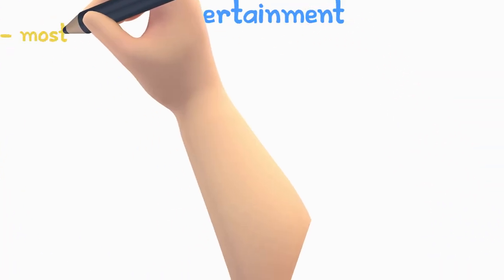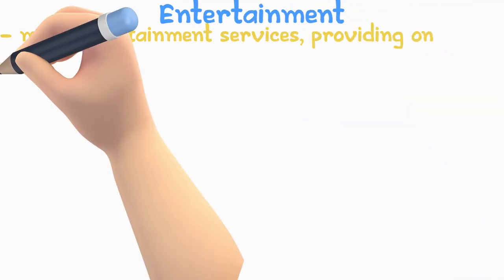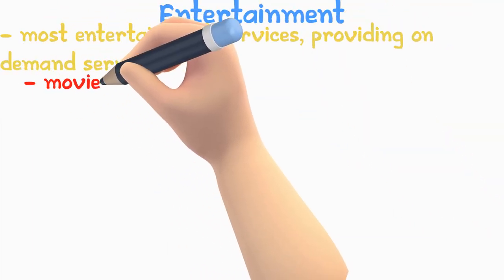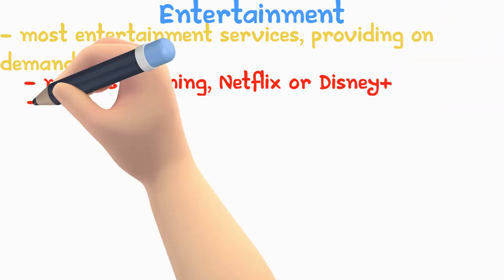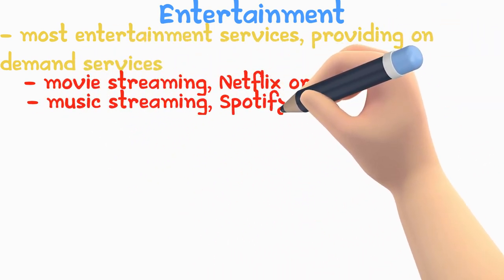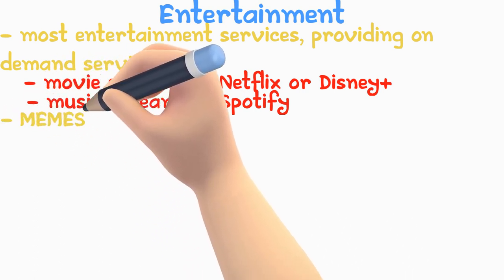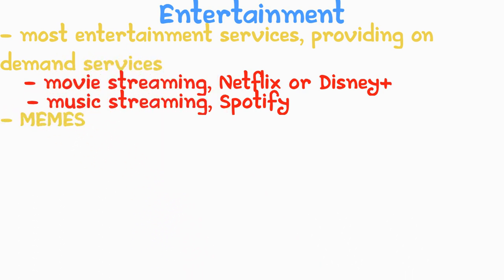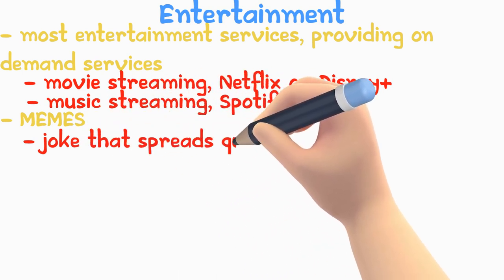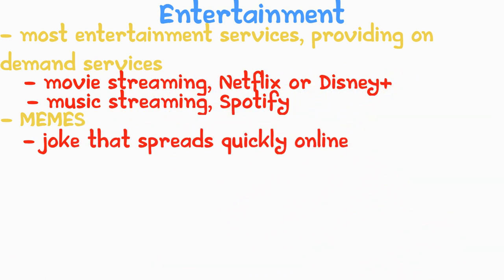Entertainment. Nowadays, you can find most entertainment services providing on-demand services like movie streaming — for example, Netflix or Disney Plus — and music streaming, for example Spotify. Some users prefer this over watching a movie in the theater or buying the DVD. When it comes to entertainment, the most popular thing online is memes. A meme is a joke that spreads quickly on the internet.